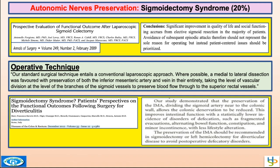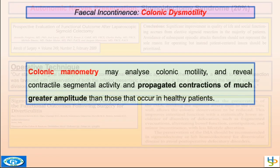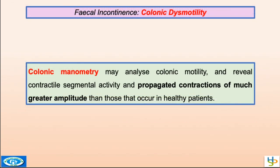How to evaluate dysmotility after colonic surgery? We can perform colonic manometry, which can reveal, for example, contractile segmental activity with propagated contractions of much greater amplitude than those that occur in healthy patients — so more motility and more risk of incontinence.